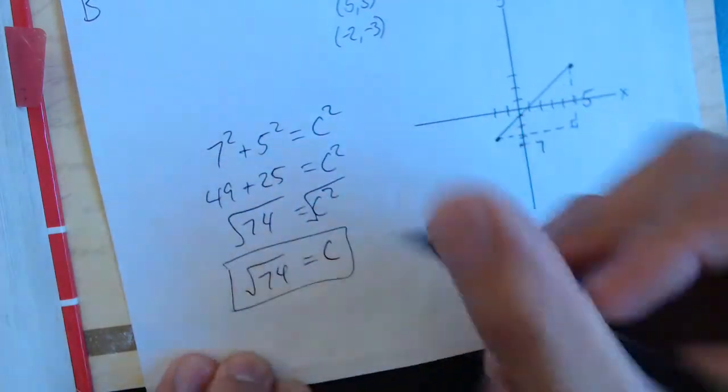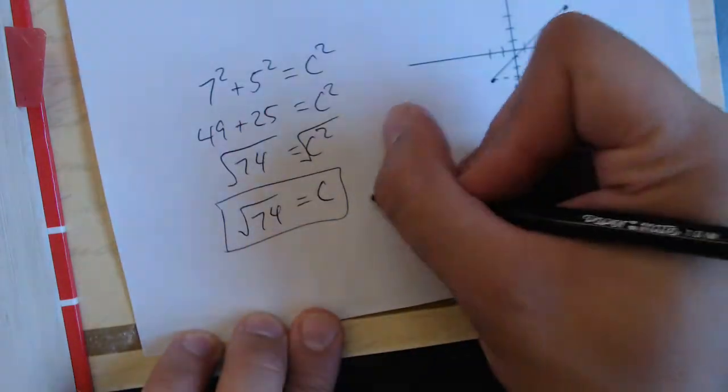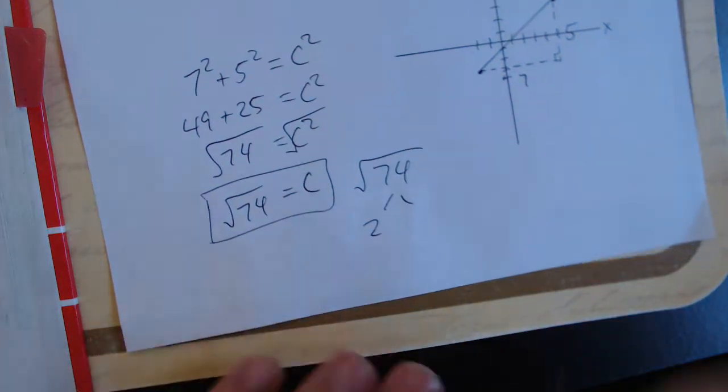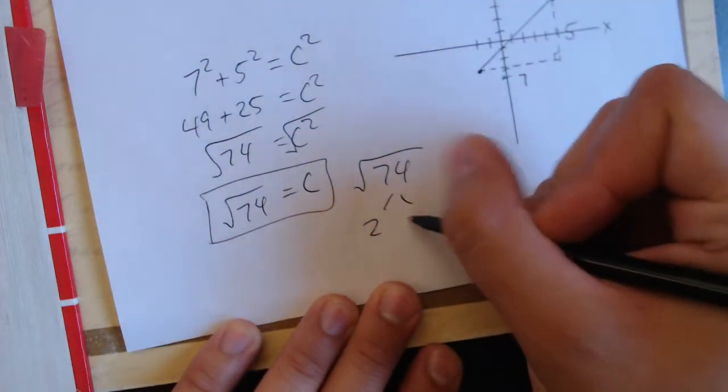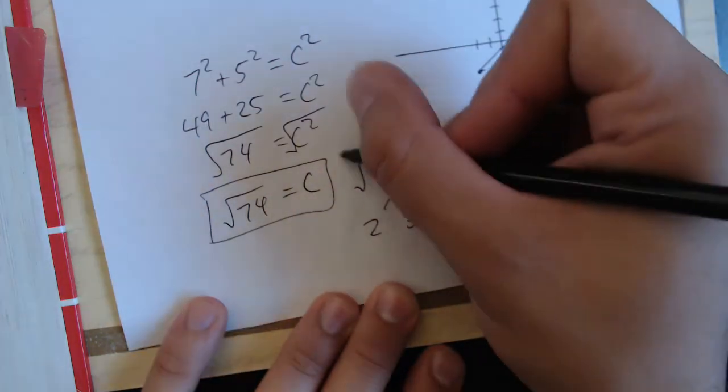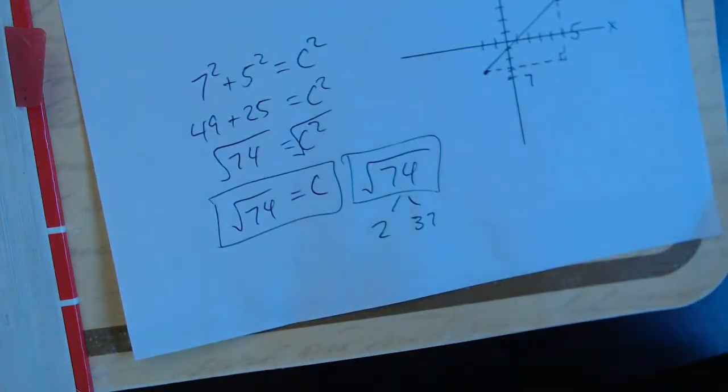And then, remember, later on in the school year we'll have to simplify this through factoring. That would be 2 and 37. I believe 37 is a prime number. Okay, never mind. It would just stay square root of 74.